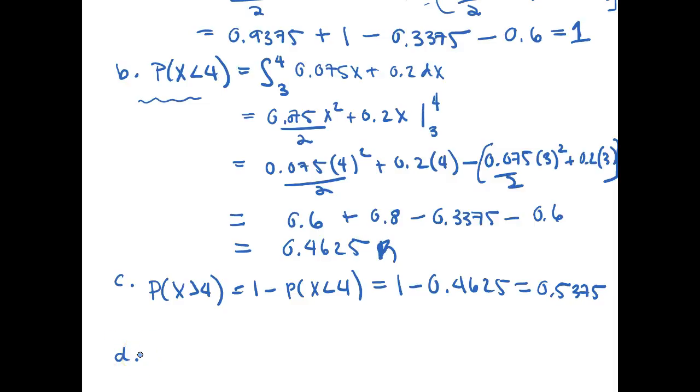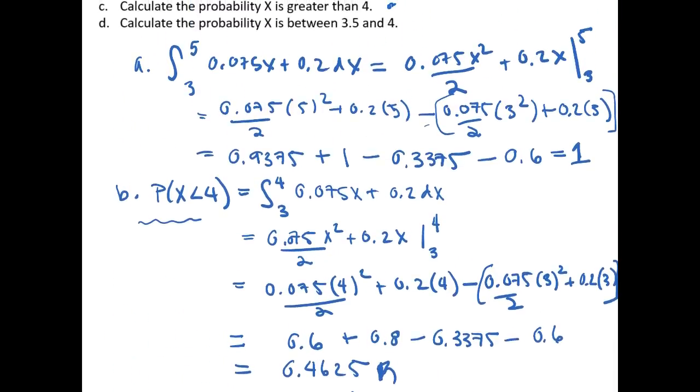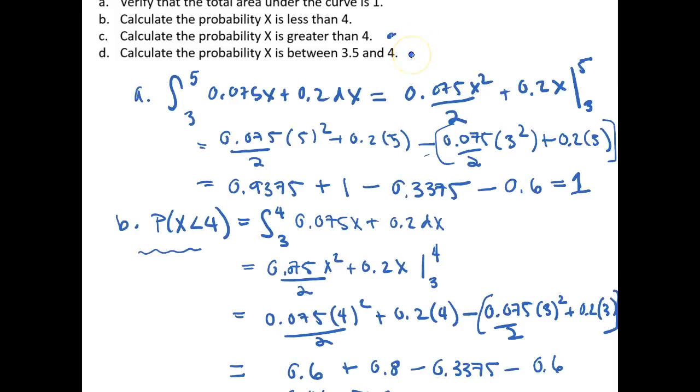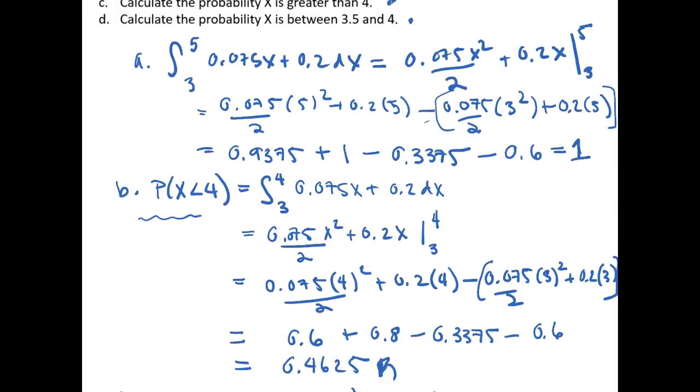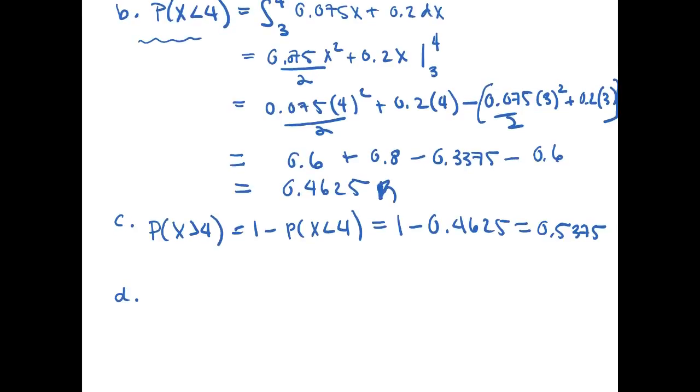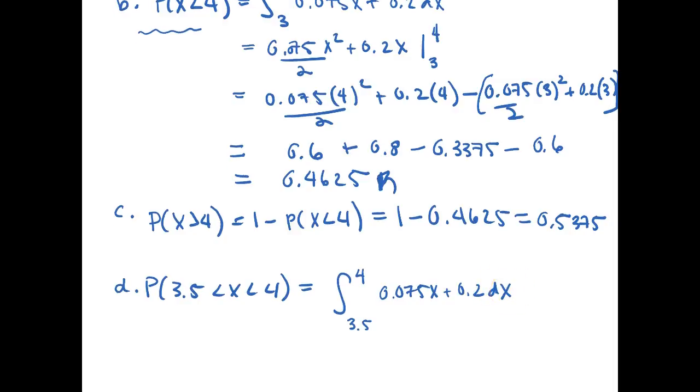And lastly, what if we want to find the probability, this here. So d, calculate the probability x is between 3.5 and 4. So in notation this is 3.5 less than x less than 4. And so this is simply equal to integrating over the bounds we're interested in. So 3.5 up to 4 of our PDF, which is 0.075x plus 0.2 with respect to dx, or respect to x.